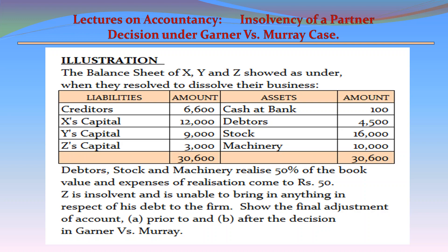Debtors, stock, and machinery realize 50% of the book value, and expenses of realization come to Rs. 50. Z is insolvent and is unable to bring in anything in respect of his debt to the firm. Show the final adjustments of accounts under: (a) prior to, and (b) after the decision in Garner vs. Murray case.